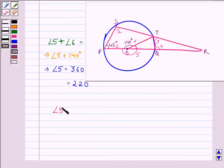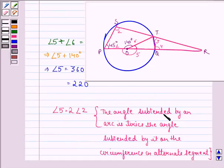We know that angle 5 is twice angle 2 because the angle subtended by an arc is twice the angle subtended by it on the circumference in the alternate segment.